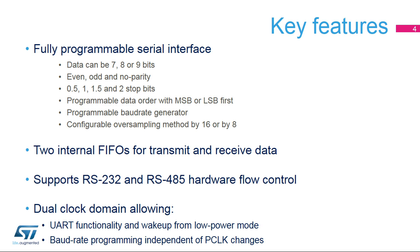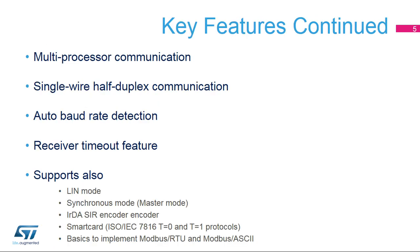The USART supports a dual clock domain, allowing wake up from stop mode and baud rate programming independent of the peripheral clock. This also allows the peripheral clock to be throttled along with the core clock without disrupting communications. The USART features a multiprocessor mode which allows the USART to remain idle when it is not addressed. In addition to full duplex communication, single wire half duplex mode is also supported.